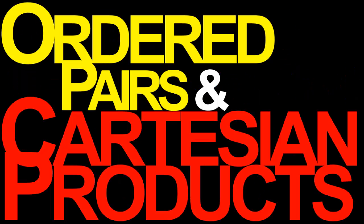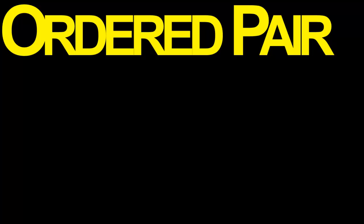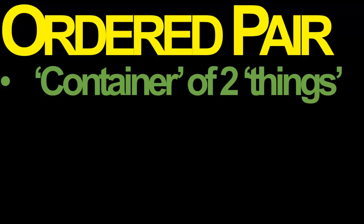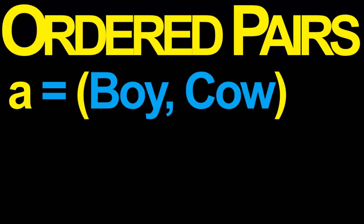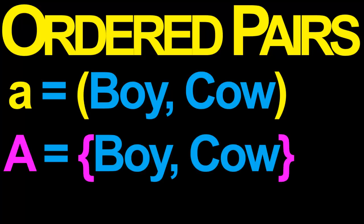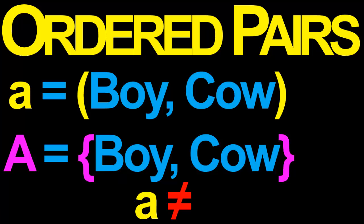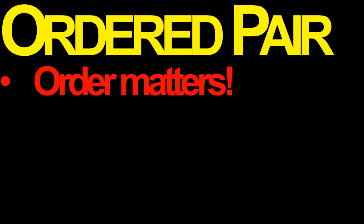We're now going to introduce another object to our world of mathematical objects, and this is the ordered pair. An ordered pair is going to be very similar to a set of two elements — it is likewise a container consisting of two things. Suppose the ordered pair A consists of the two things boy and cow. Notice that the ordered pair A looks an awful lot like the set A from earlier. The only difference is the mathematical punctuation: the set A uses curly braces, whereas the ordered pair A uses parentheses to enclose the two objects. It is important to stress that the ordered pair A is most definitely not the same thing as the set A.